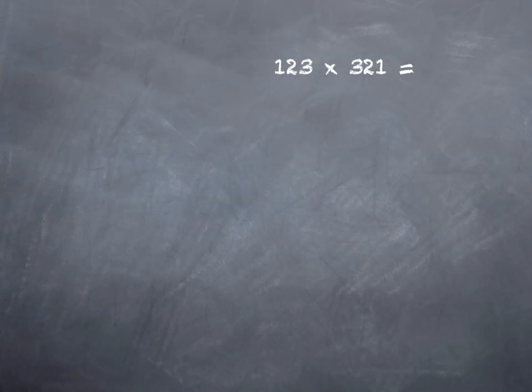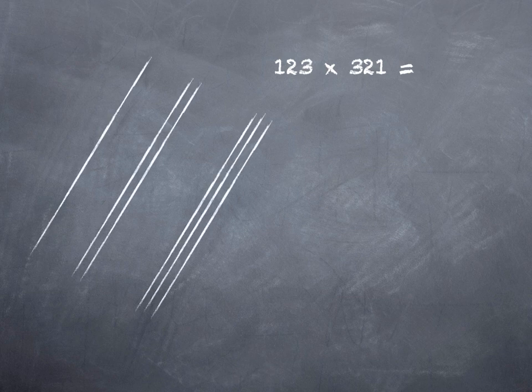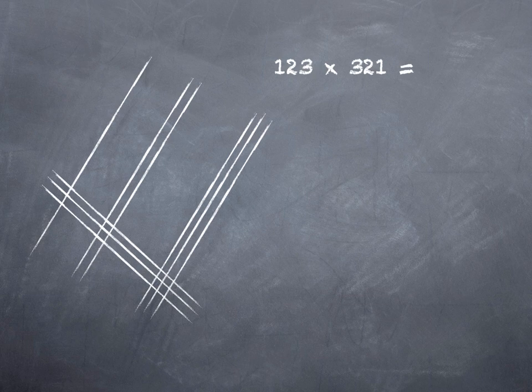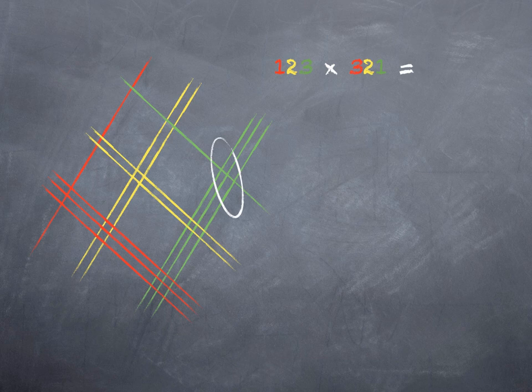If we want a little bit trickier problem, one that requires regrouping, we can try 123 times 321. There's 3 hundreds, 2 tens, and 1 one. And let's color code them again: hundreds, tens, ones. Well, if I look out here where my ones intersect my ones, I wind up with 3 intersections. And so I leave that 3 in the ones place.